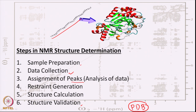Regarding the timeline: sample preparation depends on whether you get the sample from a collaborator or synthesize it yourself. Peptide synthesis can take a few days, purification about one day, then data collection two to three days. Assignment might take two weeks to one month manually, depending on your expertise. Once assignment is done, the major problem is solved. Distance restraints take a few hours, structure calculation is iterative and may take one day, and validation one to two hours. For a student starting de novo, the total process may take two to four months; experts with automated software can do it much faster.